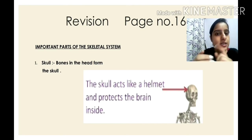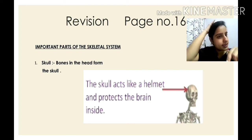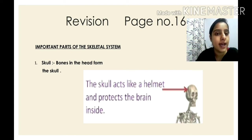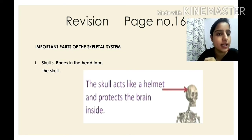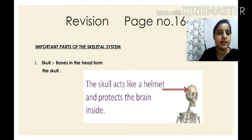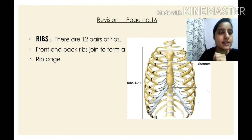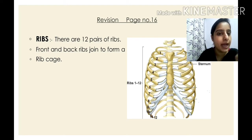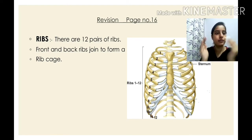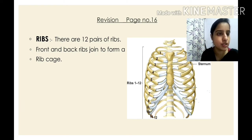The first important part is the skull. Bones in the head form the skull. The skull protects the brain inside it. The next important part is the ribs. There are 12 pairs of ribs, and front and back ribs join to form a rib cage.